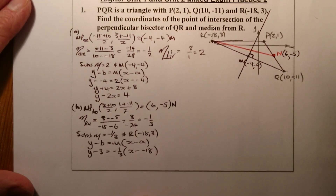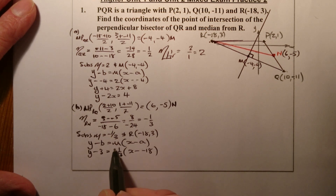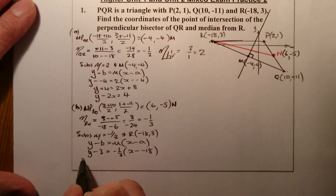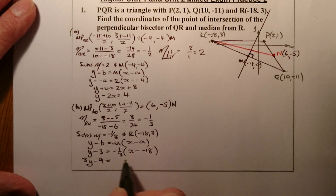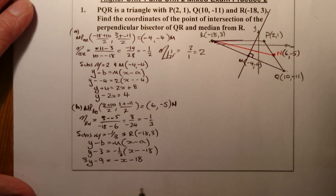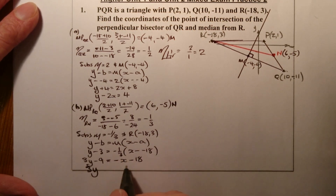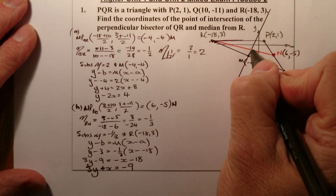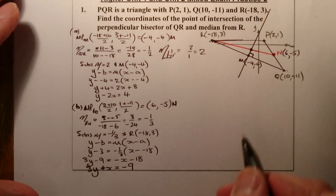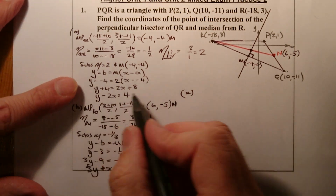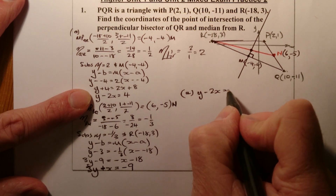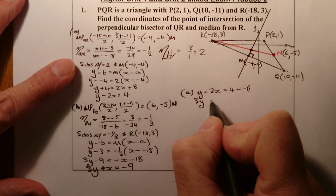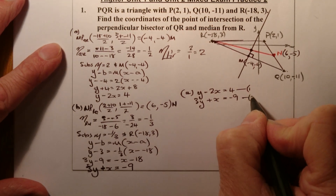I'll substitute the gradient -1/3 and point R at (-18, 3) into the general equation y - b = m(x - a). Multiplying through by 3: 3y - 9 = -x + 18... wait, that's -1 times (x - (-18)), so 3y - 9 = -x - 18. Gathering up: 3y + x = -9. That's my equation for the median.